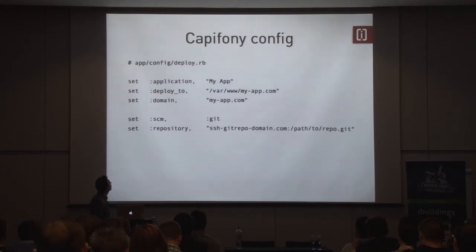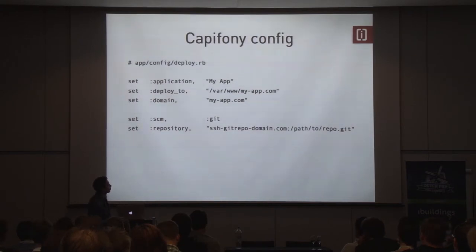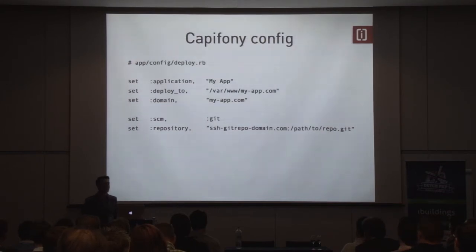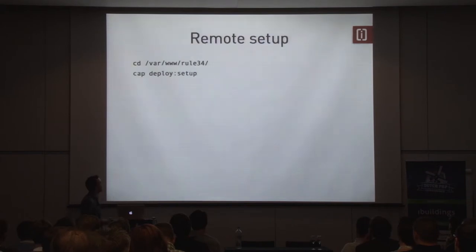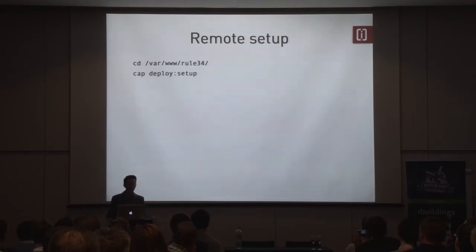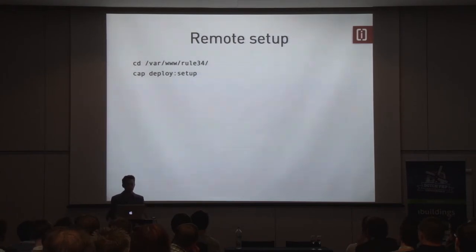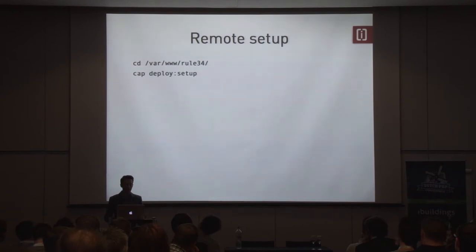This is it. You install a gem, go to your web root and do 'capifony install .' — that's it. Now it's set up on your local machine. Of course you need to configure some stuff: Capifony creates a deploy.rb file in your config directory. You set some variables — the name of your application, the directory on the remote server you want to deploy to, the domain it will run on, and the repository to use. It currently supports Subversion, CVS, Mercurial and Git.